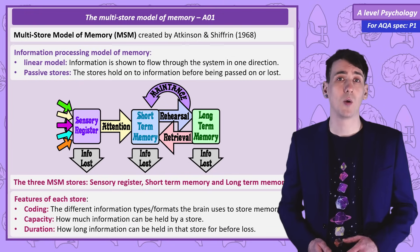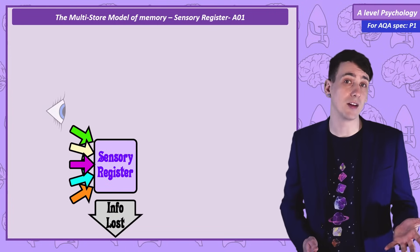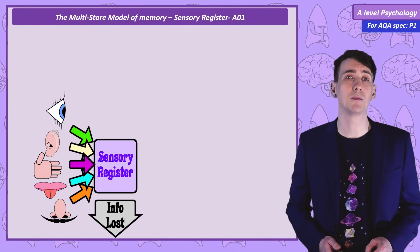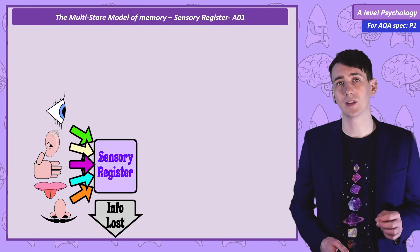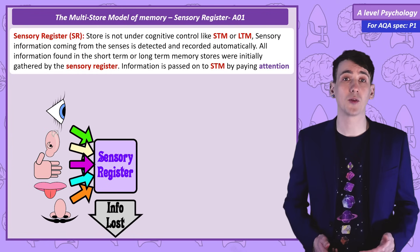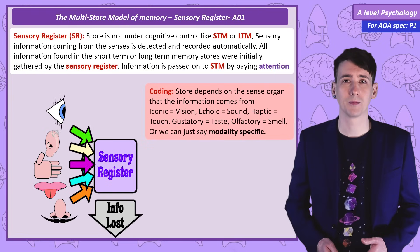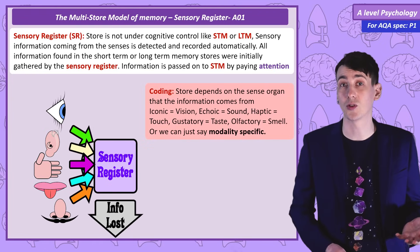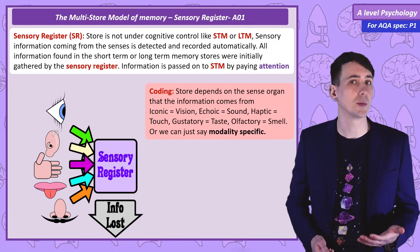Starting with sensory information — if you consider the five main senses, the information they collect needs to be first detected by sensory neurons and then received by the brain. The store that directly receives sensory information is called the sensory register. As the five senses come from very different sensory organs, we say the coding is different for each sense impression. We can give names for each form of coding — iconic, auditory, haptic, gustatory, and olfactory — but in the exam we can just say the coding of the sensory register is modality specific.